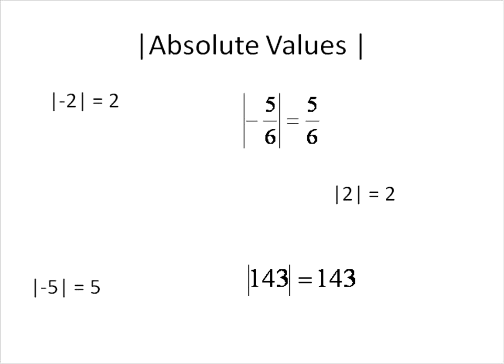Positive 143 would remain positive 143. Anything that's negative just becomes a positive value. Negative square root of 4 becomes a square root of 4. That's all absolute values do basically. These absolute value symbols, you take whatever is inside it, you make it positive, you're done.